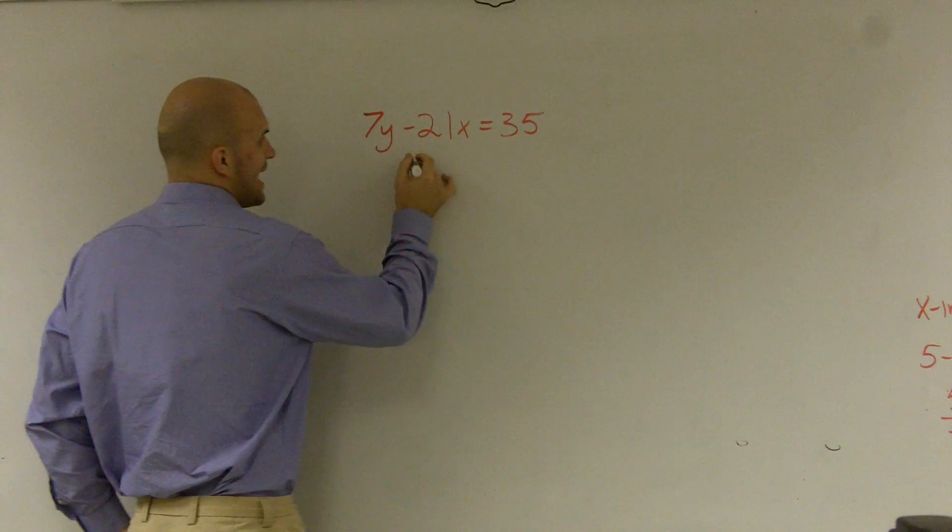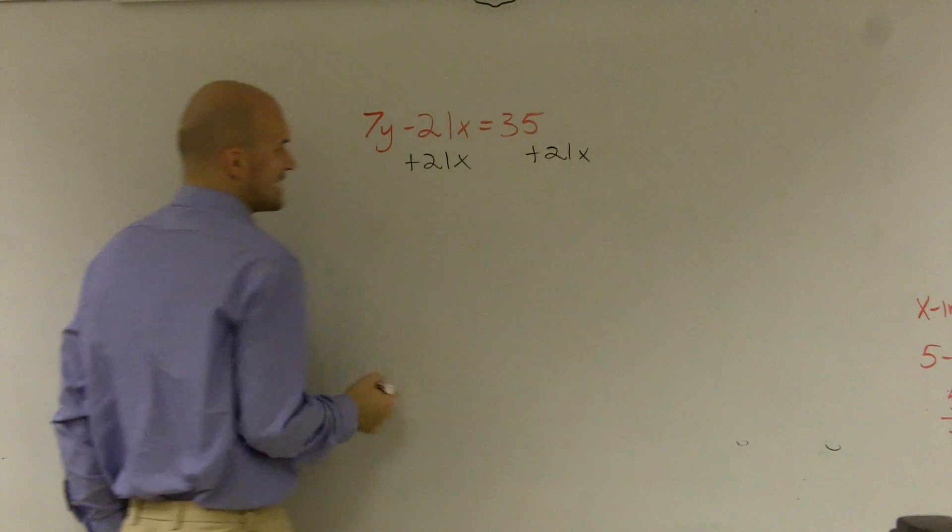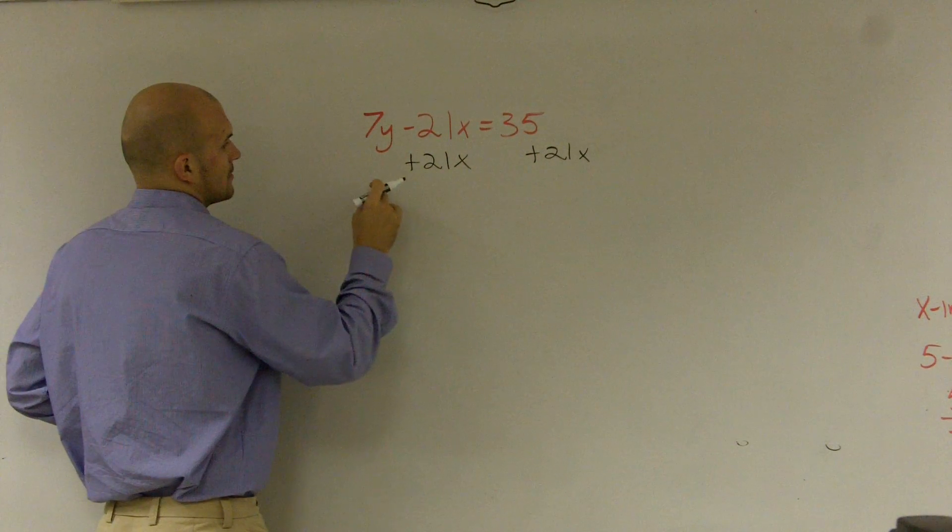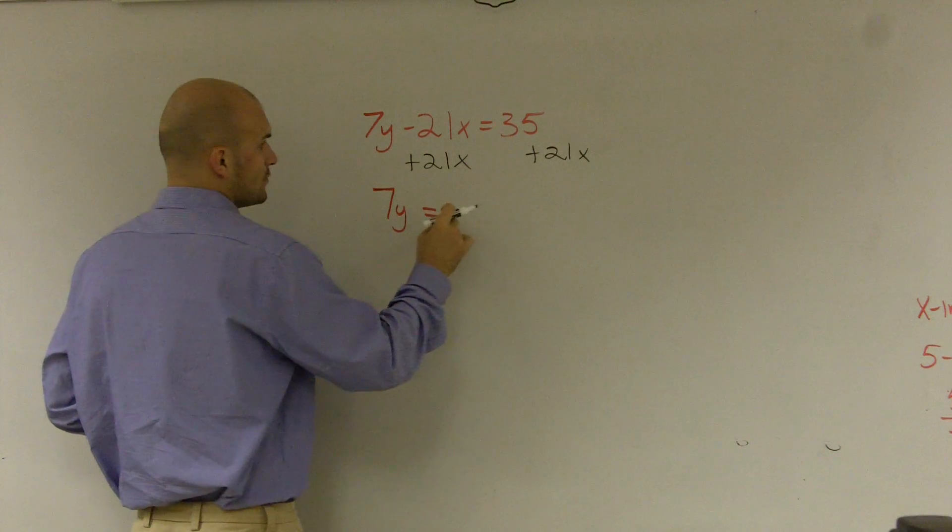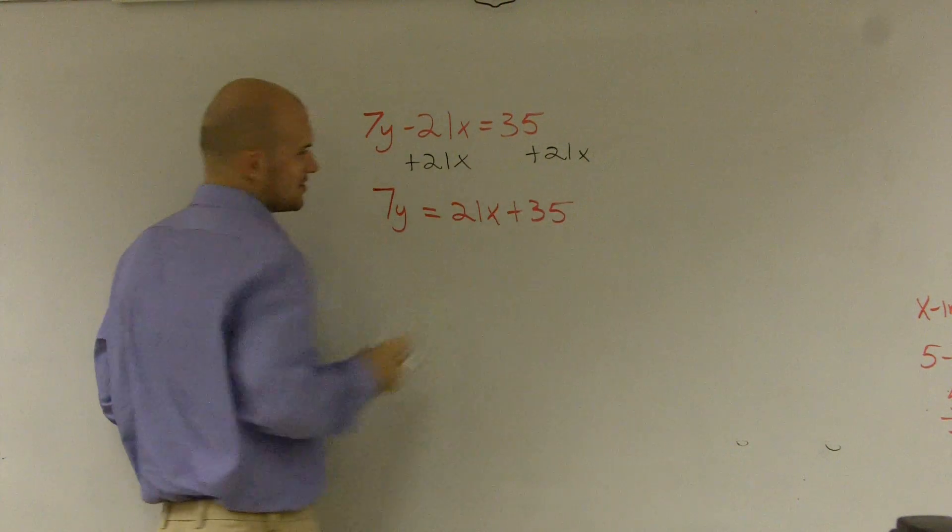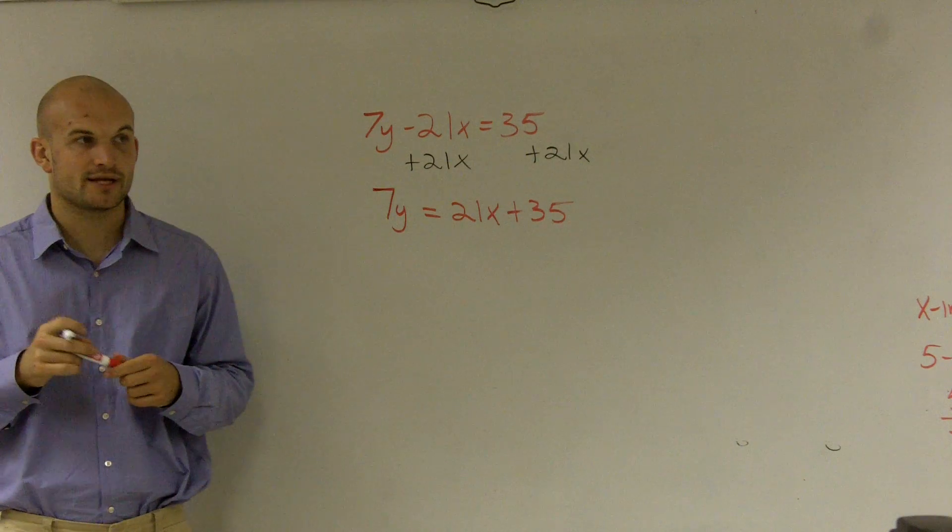What I want to do is add 21x to both sides. Therefore, I'll be left with 7y equals 21x plus 35. We always like to write our term with the variable in it in front.